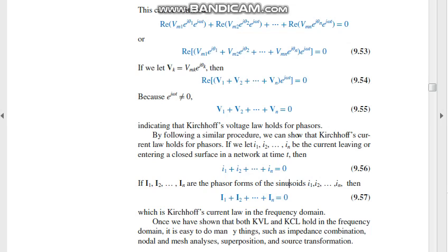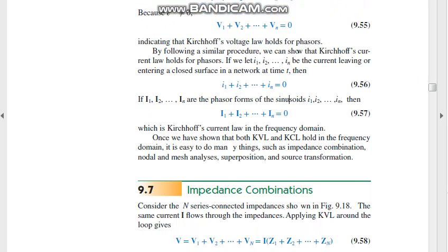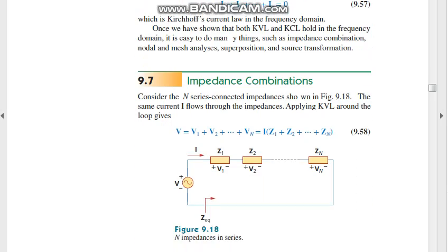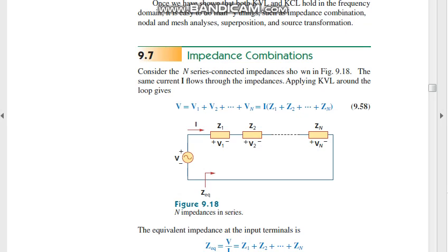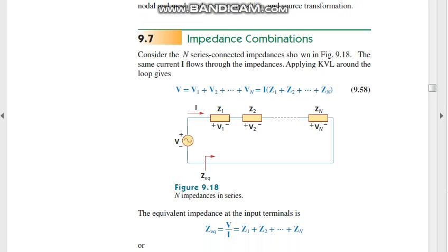Once we have shown both KVL and KCL hold in the frequency domain, now for impedance combinations - there is a series circuit we can see here. There is a voltage source, Z1, Z2, up to Zn are the impedances, and each impedance has voltage drops V1, V2, up to Vn with a single current I. We can apply KVL around the loop and get the equivalent Z = V by I. At the input terminals, Z equals Z1 plus Z2 up to Zn.